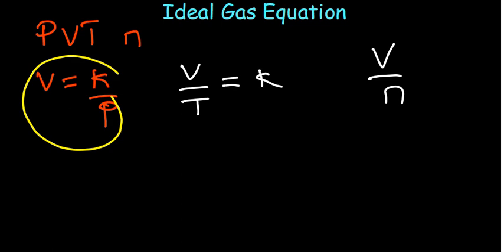So V over T equals k, and V over n equals k. It's just V divided by temperature and V divided by the number of moles. This is where all the other equations are being built from. So you end up having V equals kT, and when you apply the temperature will be on top. The number of moles will be on the other side since it was on the denominator.